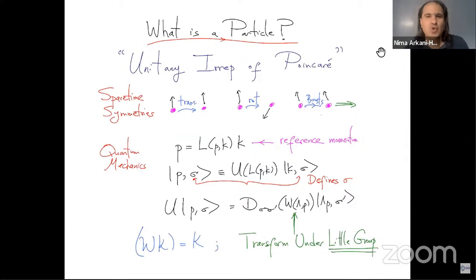So, as Weinberg does, and really going back to Wigner, we begin with the very simple question, what is a particle? And most abstractly, a particle is a unitary irrep of the Poincaré group.